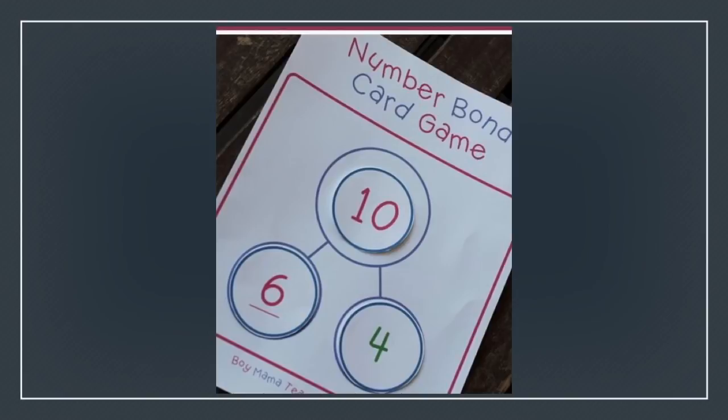Now, one of the biggest reasons is because in a number bond, typically the circles are all the same size. This one's a little bit different where the whole, the circle for the whole is a little bit bigger, but oftentimes you will see them where they're the exact same size.